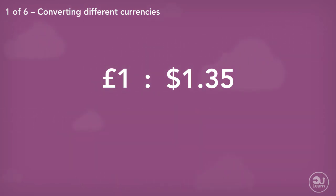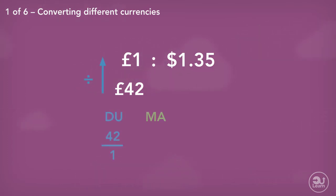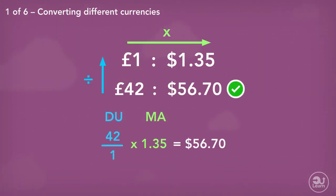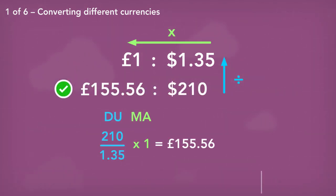We could have come to these answers using our Duma method — dividing up and multiplying across — which was explained in our previous videos. Let's lay out our information for the first part of the question again: divide up, multiply across. Now let's try with the second part of the question: divide up, multiply across. It still works, and it's a quick way of finding the missing value with ratios.